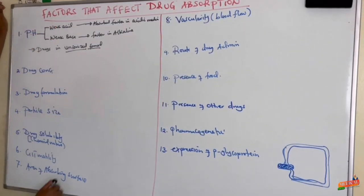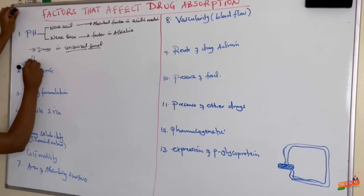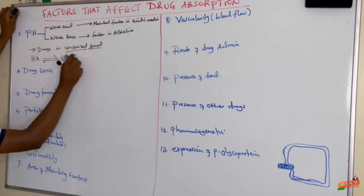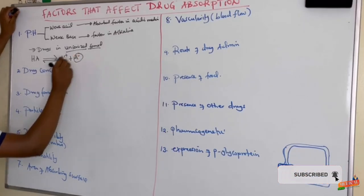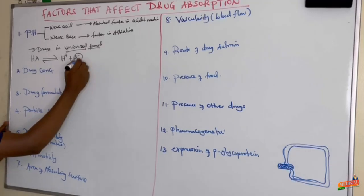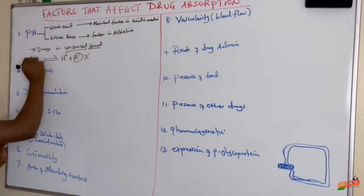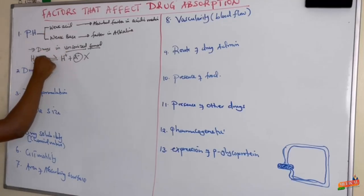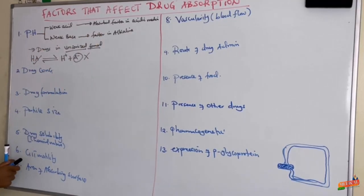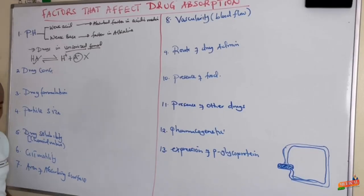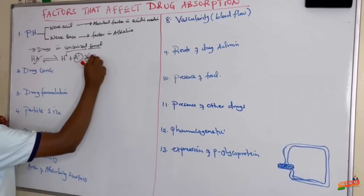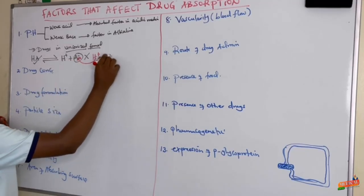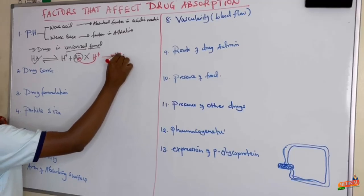For a weak acidic drug, on dissociation it forms a proton plus an ionized form. So the ionized form cannot cross the membrane; it is the unionized form (HA) that crosses. When we provide an acidic medium, the proton from the medium combines with the ionized drug to form the unionized drug HA, which is easily absorbed.